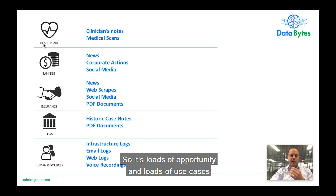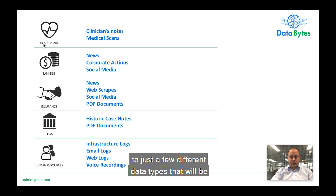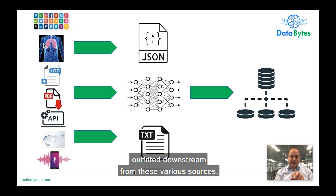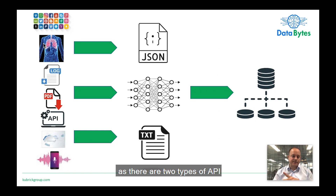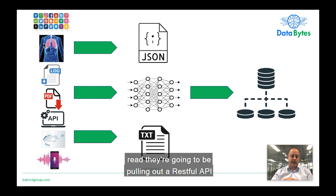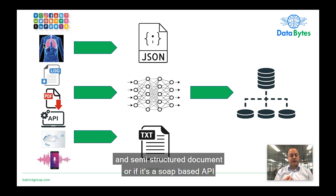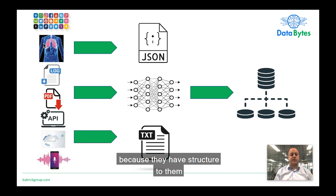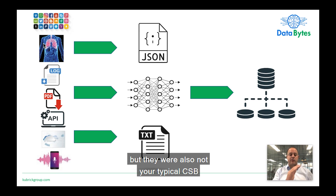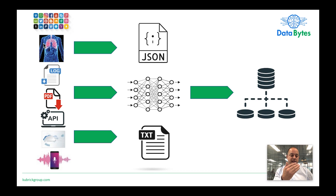There are loads of opportunities and use cases for deriving value from unstructured data. These examples can actually be boiled down to just a few different data types outputted downstream. Considering social media and APIs — there are two types: you're either pulling from a RESTful API, in which case the output will likely be a JSON semi-structured document, or if it's a SOAP-based API, then you're likely going to be retrieving XML data. These are not unstructured — they are semi-structured documents because they have structure to them, but they're also not your typical CSV, so they are likely heavily nested.